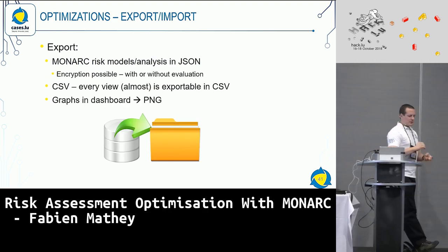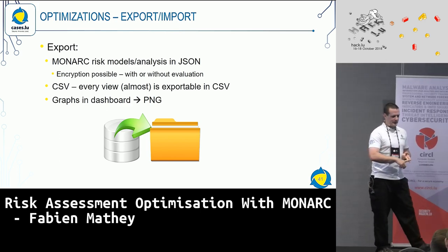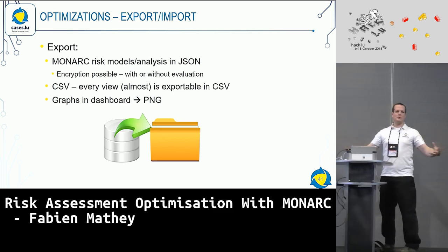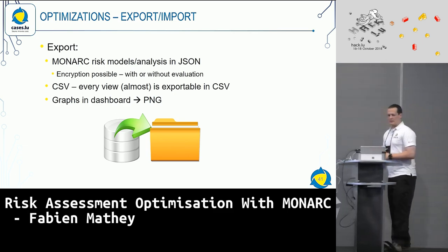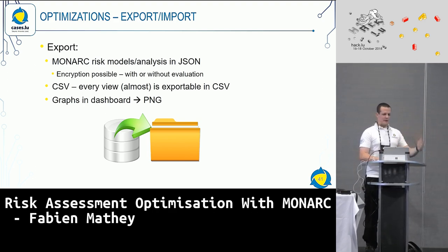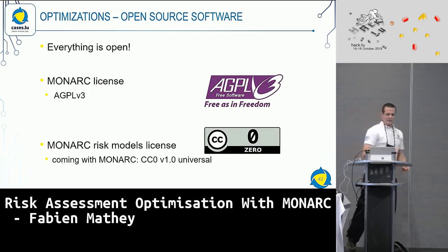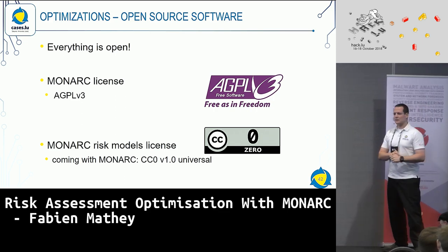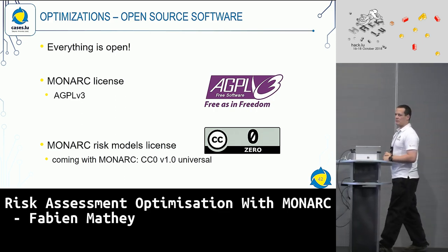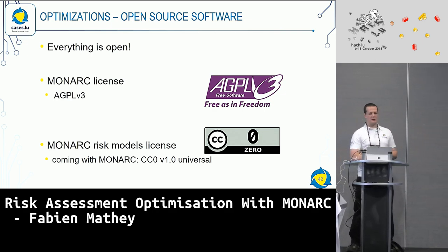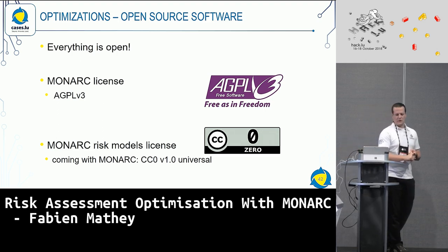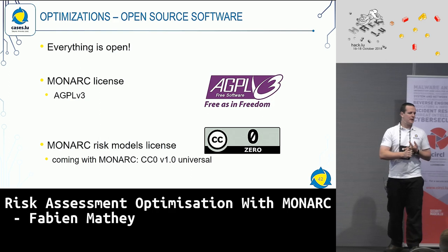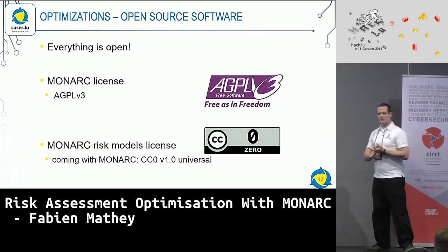There will be a CSV import as well soon. As for the export, we have risk models that can be exported as JSON files, encrypted with and without the evaluation. You can export just the risk model to share with the community, or export with the values to regroup in a bigger risk assessment or to show to a regulator. CSV and graphs in a dashboard can also be exported as PNG. Everything needs to be open — that's like the sixth optimization we made. If it's open source and somebody has a great feature they want implemented, they can go ahead and do it on GitHub. We chose Afero GPL v3 for all the code, and for the models we've created, we've chosen to make them just public domain.